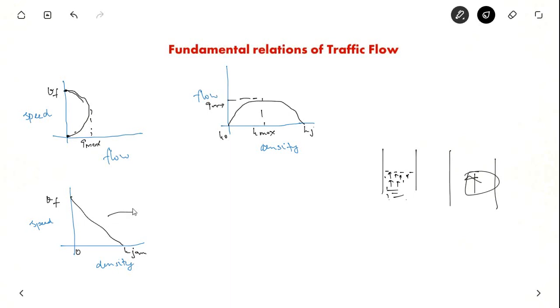Now what is the relation between these things? So this graph can be written as an equation. It is a very important equation. Speed equal to V is equal to free flow speed VF into 1 minus K divided by KJ. Linear relationship. This is a very important equation which you will be further using for solving so many questions.